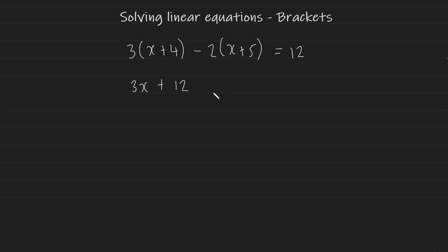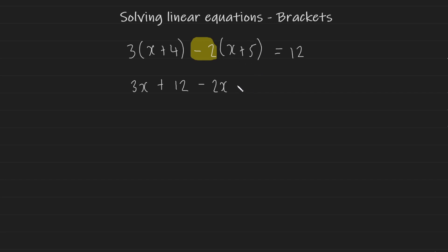This next step is very important, especially if you have a minus here. Most people just try to multiply the 2, but the best approach is to multiply the entire negative 2 into (x + 5). So negative 2 multiplied by positive x gives negative 2x, and negative 2 multiplied by positive 5 gives negative 10, and this equals 12.